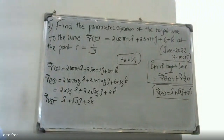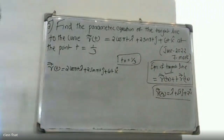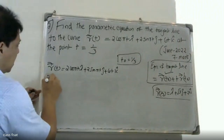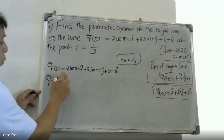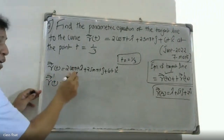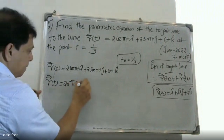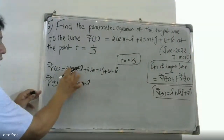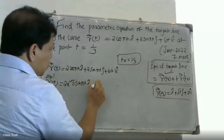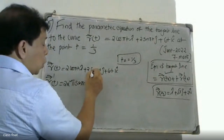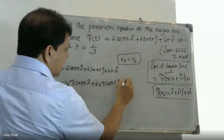Now differentiate r(t). Differentiating each component: the i component gives -2π·sin(πt), the j component gives 2π·cos(πt), and the k component gives 6. So r'(t) = -2π·sin(πt)i + 2π·cos(πt)j + 6k.